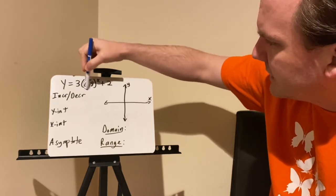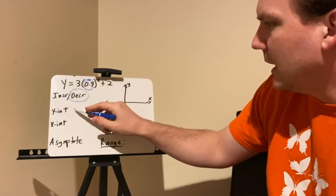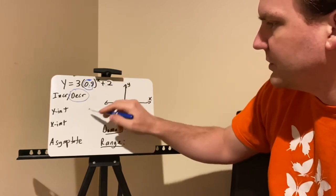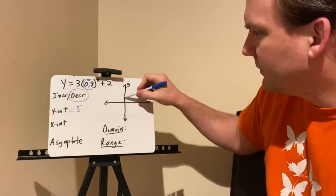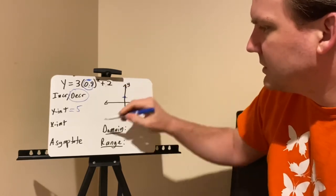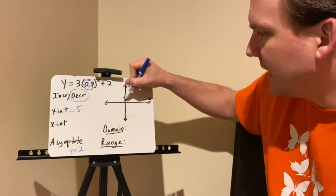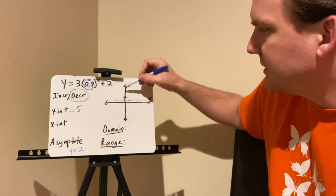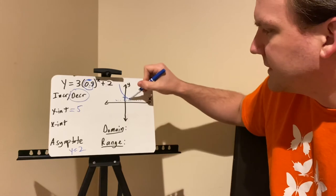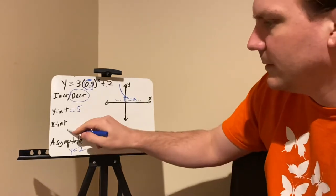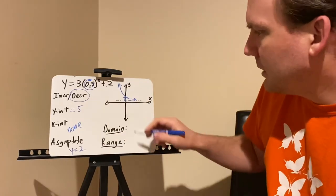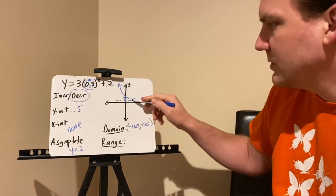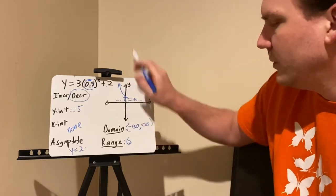For y = 3 times 0.8 to the x plus 2: the b value is 0.8, which is less than 1, so it's decreasing. The y-intercept: when x = 0, 0.8⁰ = 1, so 3 times 1 plus 2 = 5. The asymptote is y = 2. Since it's decreasing toward the asymptote y = 2 and starts at y = 5, it never crosses the x-axis — no x-intercept. The domain is negative infinity to positive infinity, and the range is from 2 up to positive infinity.